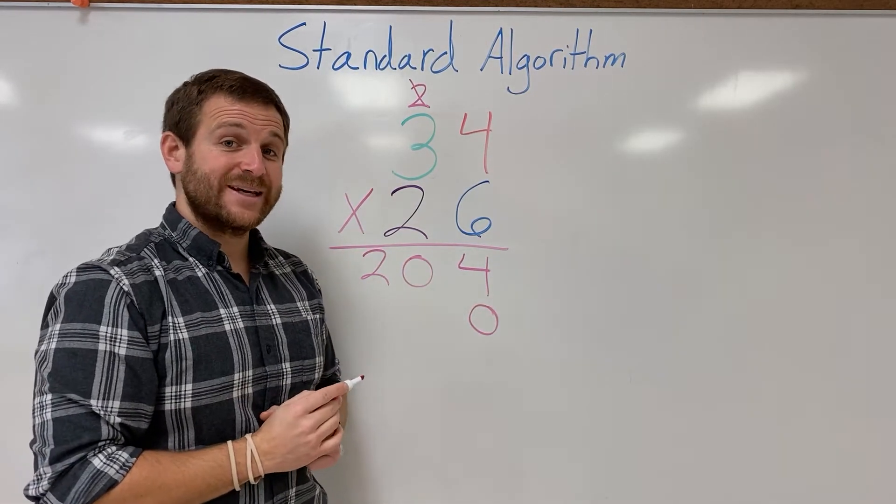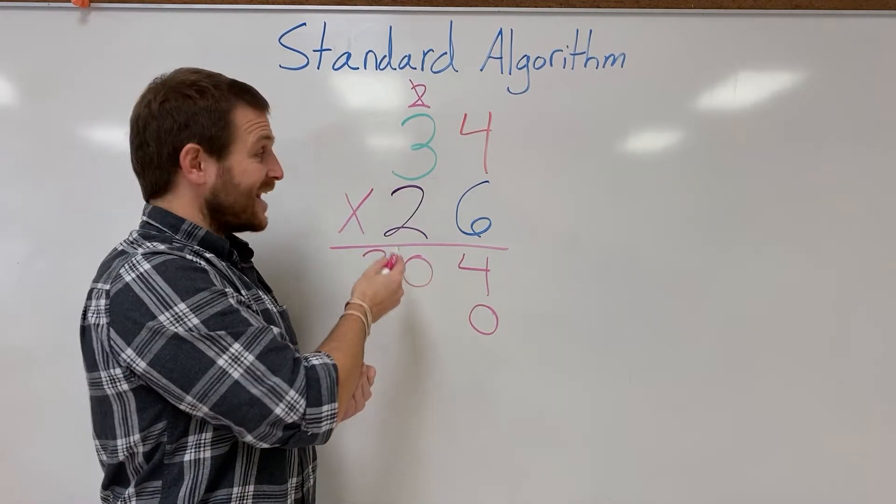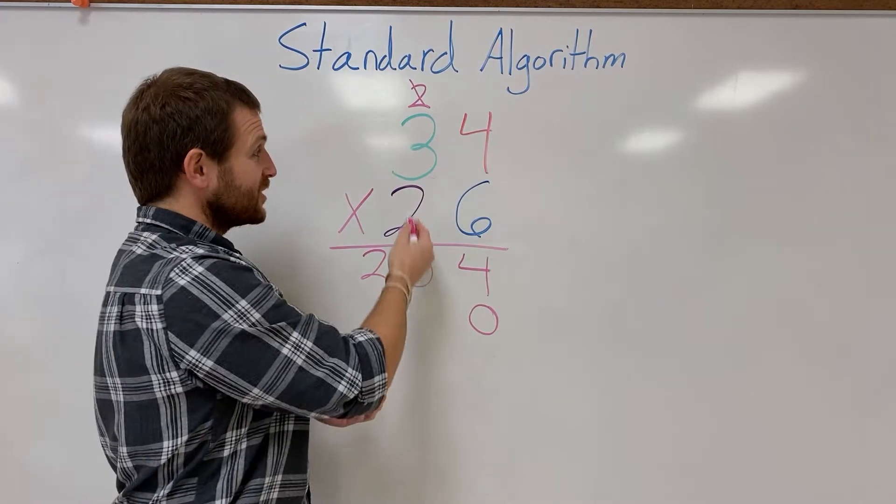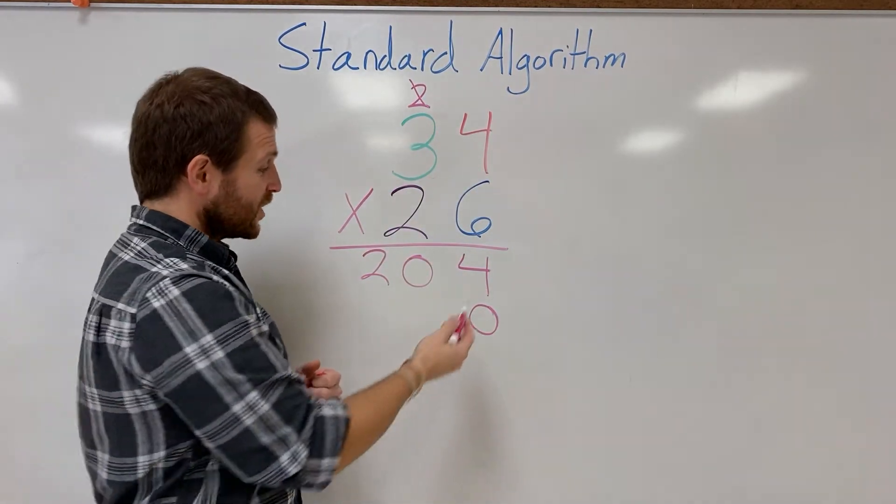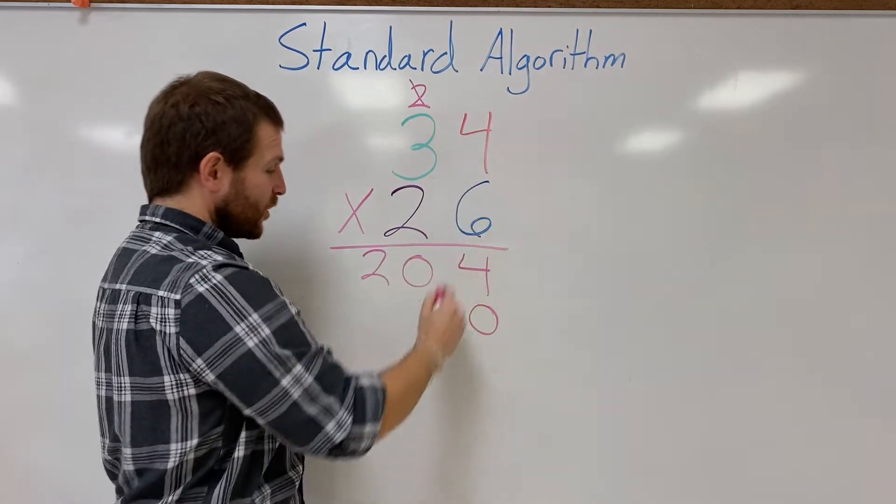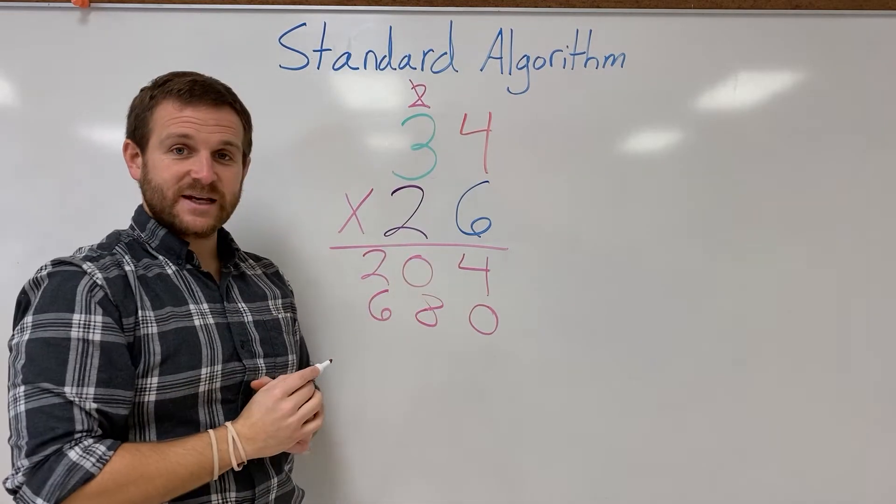By putting my place value position in there, it allows me to look at this instead of as a 20 as a 2, and I can simply multiply 2 times 4 and 2 times 3 to get my final answer. So let's do that now. 2 times 4 is gonna give me 8. 2 times 3 gives me 6.